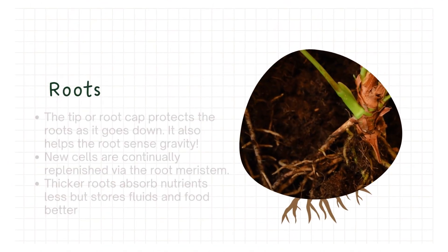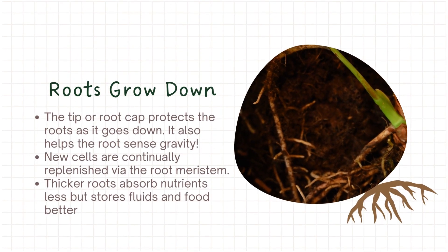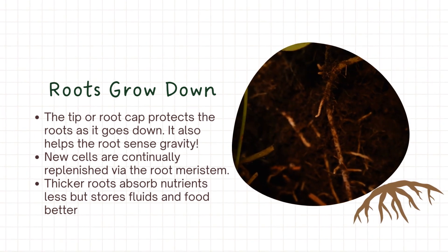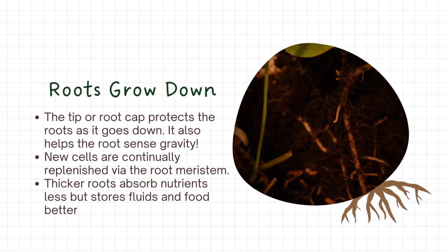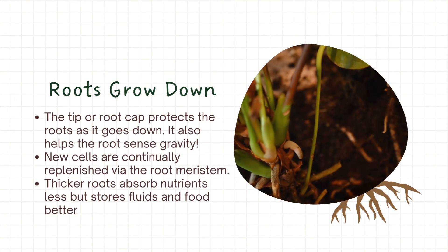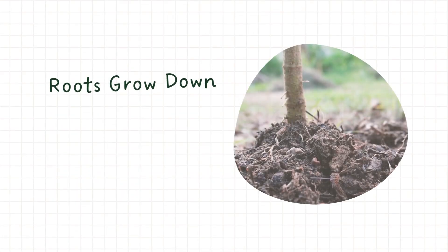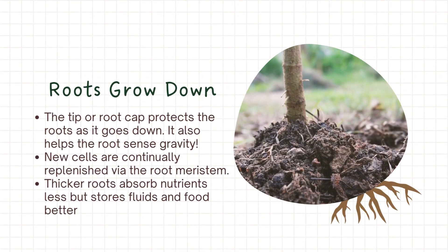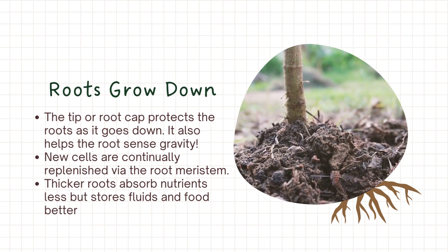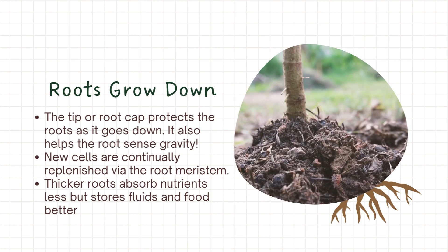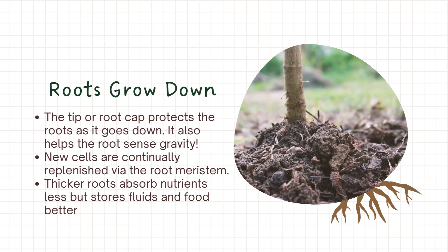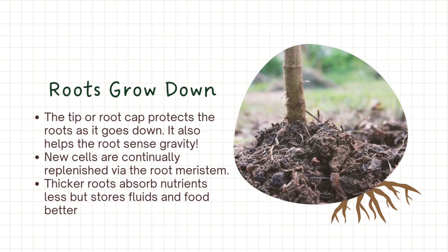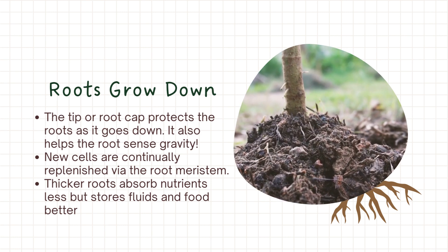Roots grow downward. The tip or root cap protects the roots as it goes down; it also helps the root sense gravity. New cells are continually replenished by the root meristem. Thicker roots absorb nutrients less but store fluids and food better.